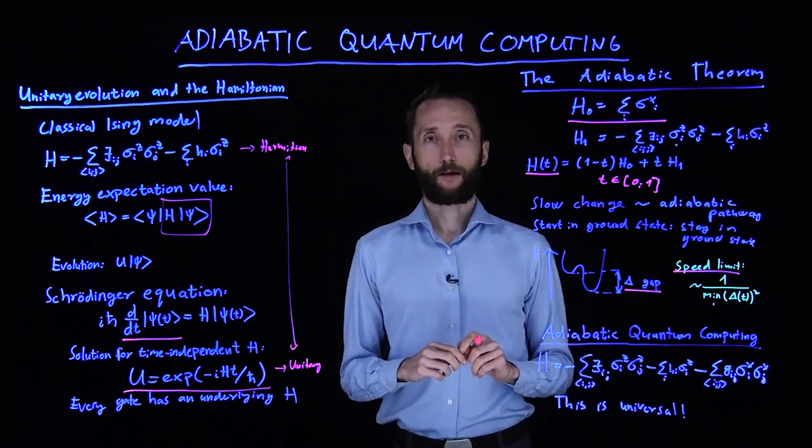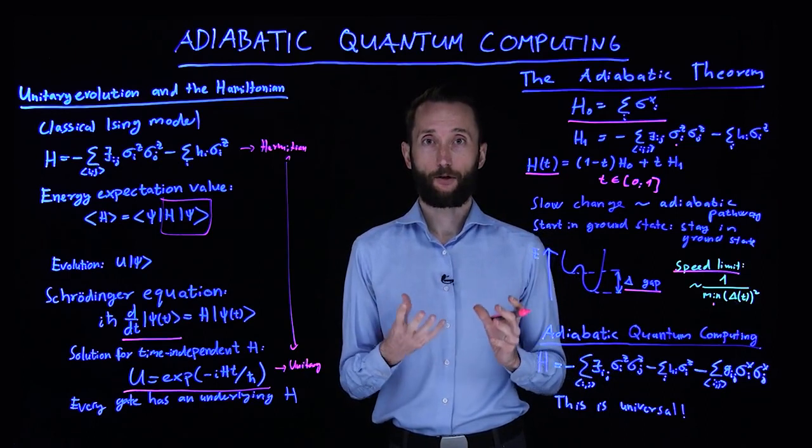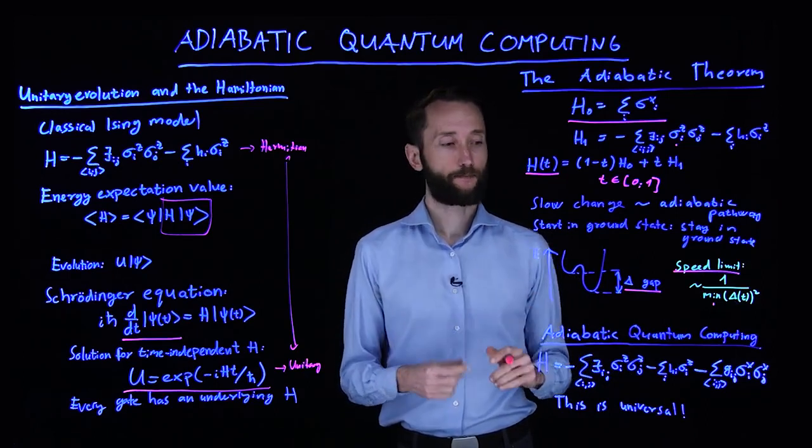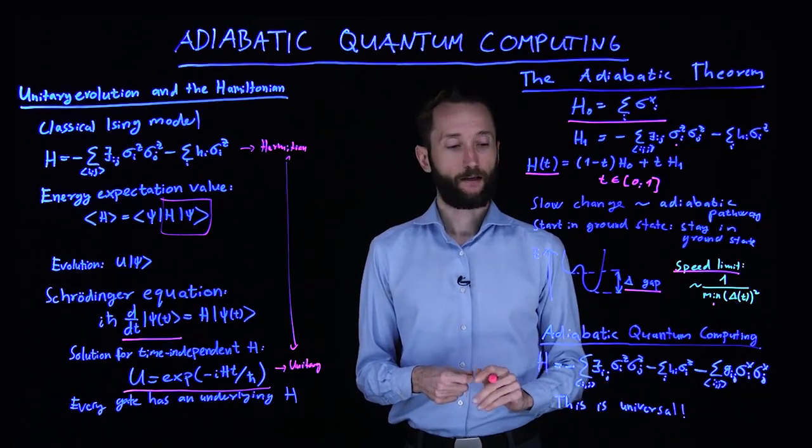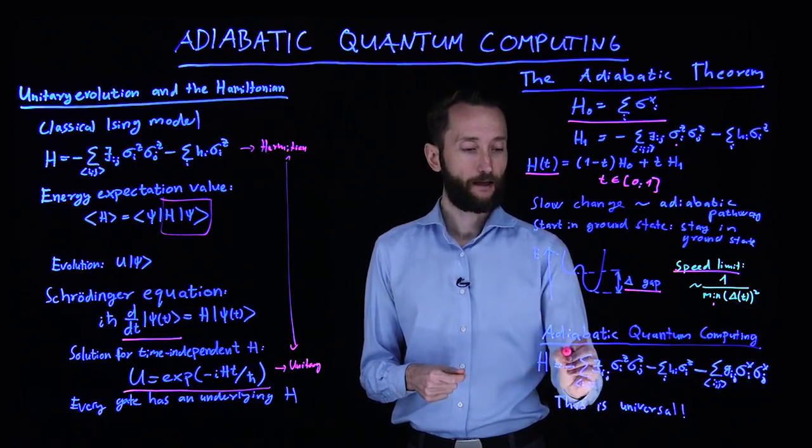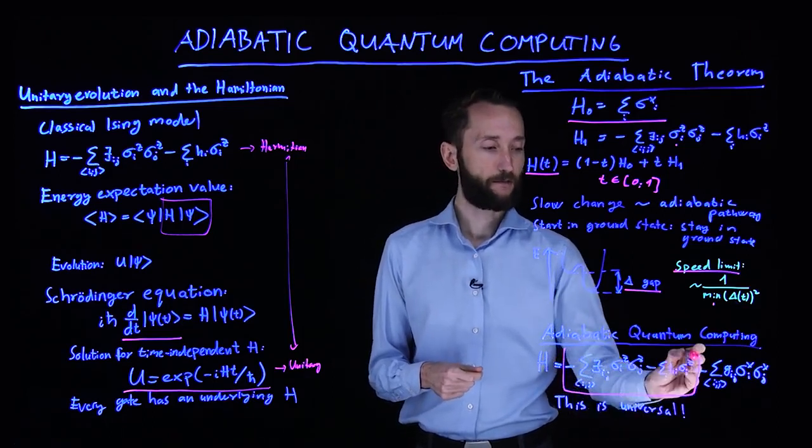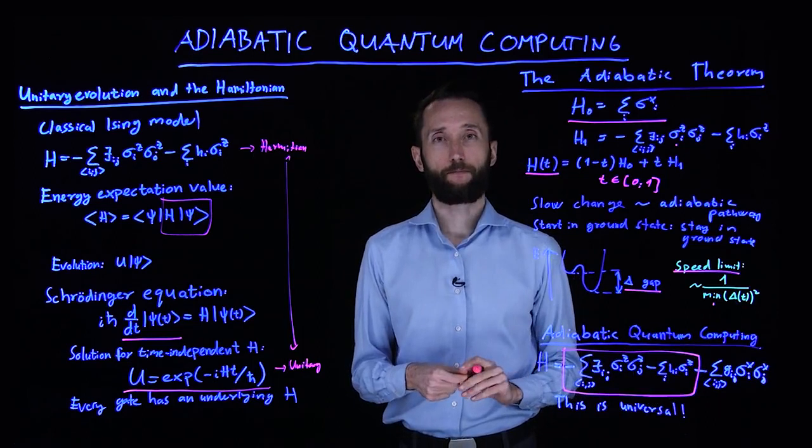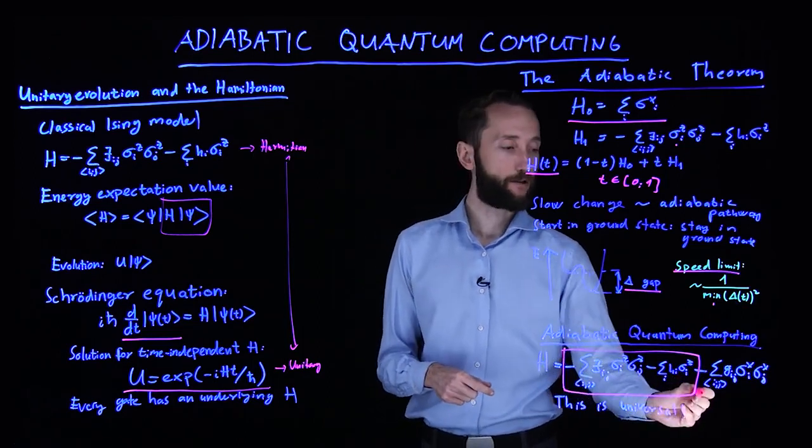So we can use this to perform universal calculations. That's called adiabatic quantum computing. In this case, the Hamiltonian has this part, which is just your classical Ising model, and we have to add one more term.